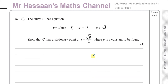Welcome back to Mr. Hassan's maths channel. I'm now answering question number 6 from the P3 International A-Level Edexcel October 2021 exam. This question is about curve C1 which has equation y equals 3 ln(x squared minus 5) minus 4x squared plus 15, where x is greater than root 5.